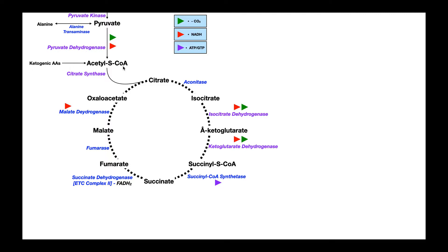Acetyl-CoA is considered the central coenzyme because not only can it enter the citric acid cycle as shown right here, but as we'll see in a few minutes it can participate in a variety of other biosynthetic pathways. Let's first talk about the citric acid cycle. The first reaction is citrate synthase, which performs a condensation reaction between acetyl-CoA — in particular the two carbons of the acetyl group — and oxaloacetate, which is a four-carbon molecule. Combining a four-carbon molecule with two carbons gives us citrate, a six-carbon molecule.